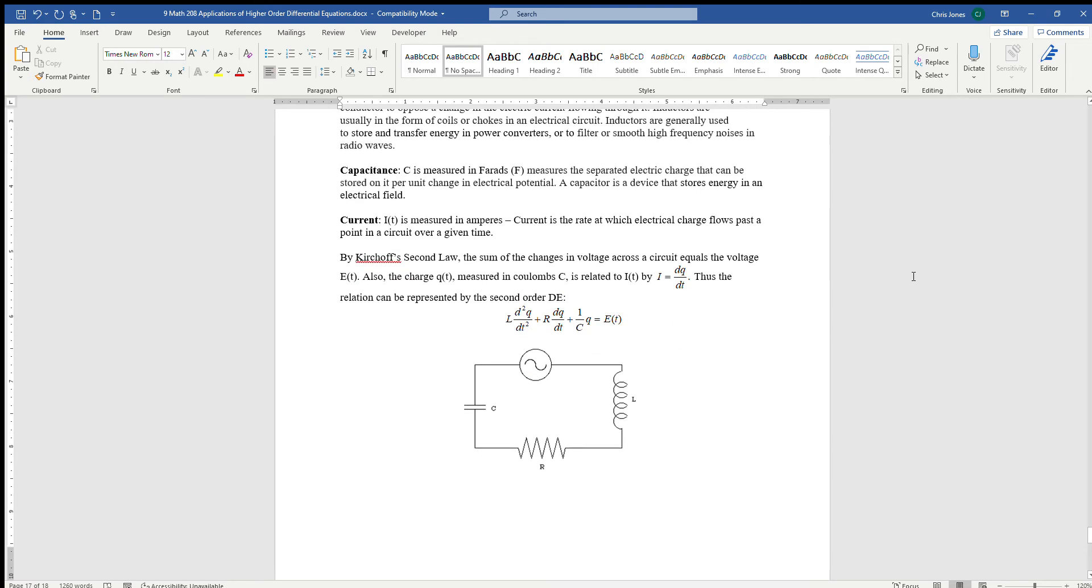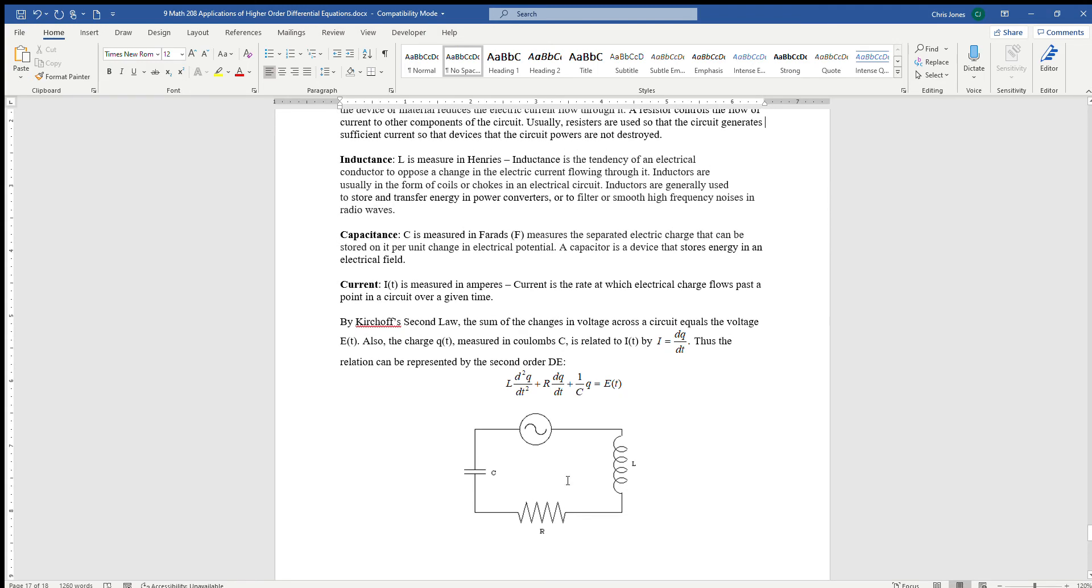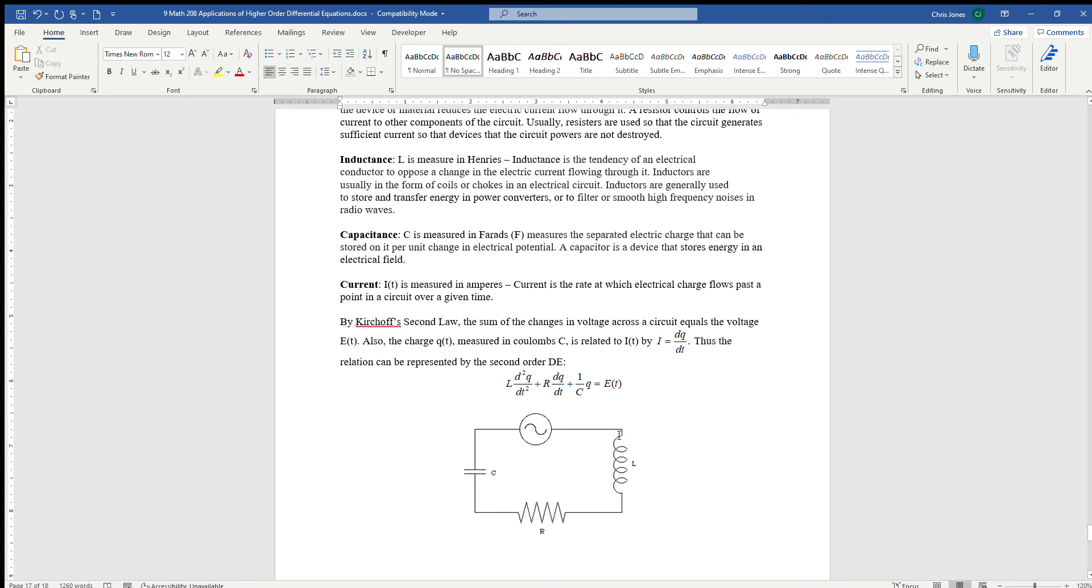As a diagram of what one of these looks like, we have this inductor L, which is like a coil that stores energy and can change the rate at which electrical charge is going through. We have a resistor, which dictates the rate at which the flow goes through the electrical circuit. And we have this capacitance, a capacitor that separates the electrical charge and stores energy in an electrical field.